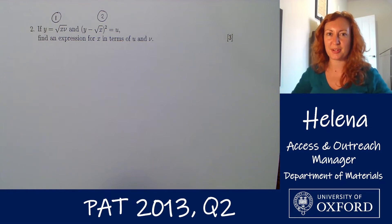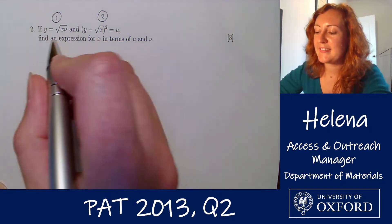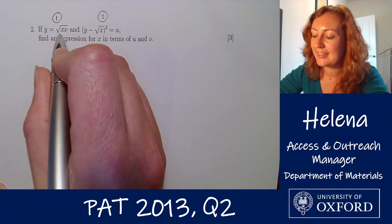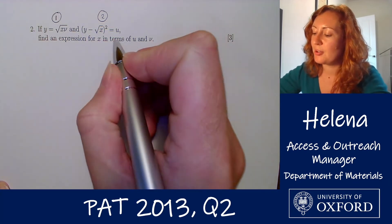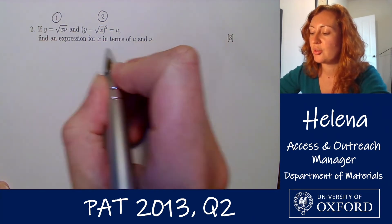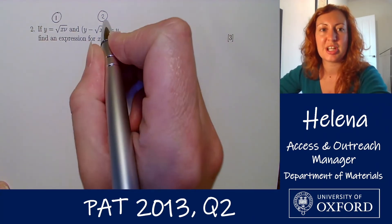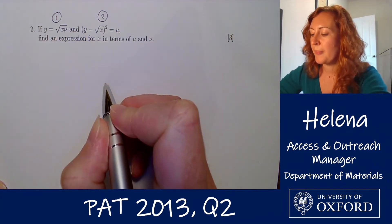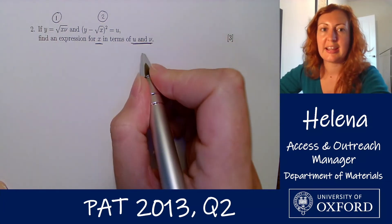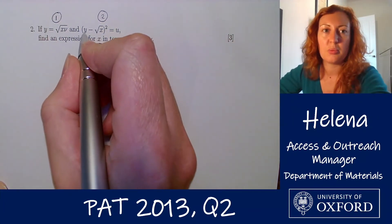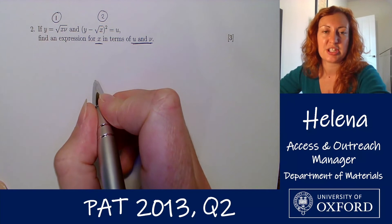So let's have a look at what the question is asking. In this question here we are given an expression for y in terms of x and v, which I've labelled equation one, and we're also given an expression for u in terms of y and x, which I've labelled equation two. We're being asked to find an expression for x in terms of u and v, so we don't want any y terms in our expression for x.